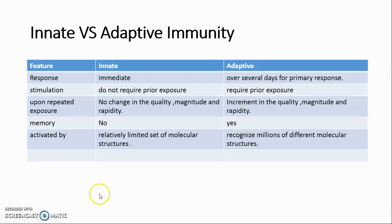There is no appreciable change in the quality or magnitude of the innate immune response to a microbe upon repeated exposure — that is, there is little or no memory. In contrast, repeated exposure to a microbe enhances the rapidity, magnitude, and effectiveness of adaptive immune responses.